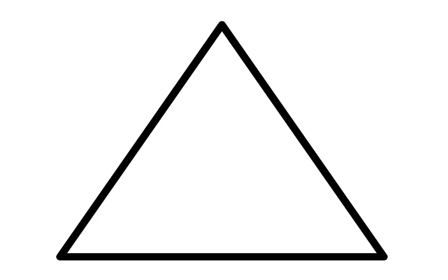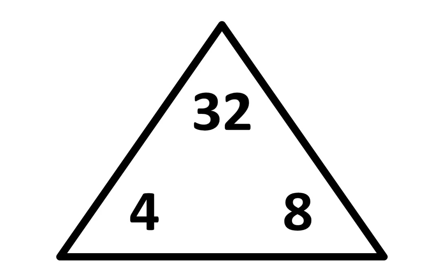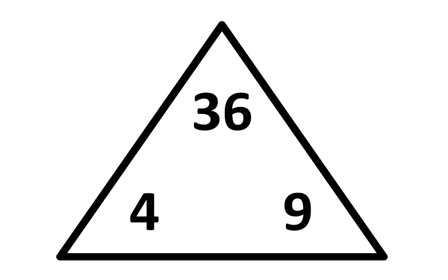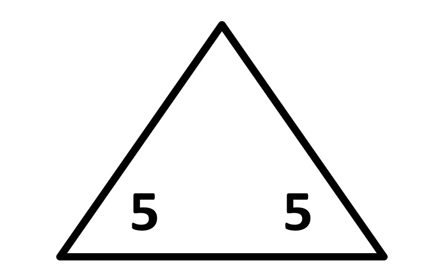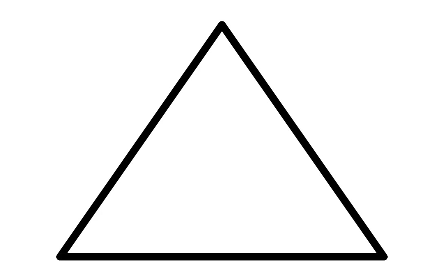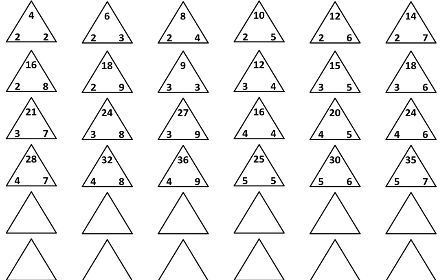Let's move to the fourth row. In the next triangle, write 4 times 7 is equal to 28. In the next triangle, write 4 times 8 is equal to 32. In the next triangle, write 4 times 9 is equal to 36. In the next triangle, write 5 times 5 is equal to 25. In the next triangle, write 5 times 6 is equal to 30. In the next triangle, write 5 times 7 is equal to 35. And that completes the fourth row.